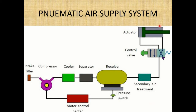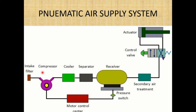Next comes the secondary air treatment system, which involves the control valve and actuator — to be discussed later. First, the inlet filter: it is required because atmospheric air carries a lot of dust material. The filter removes those dust particles before passing air to the compressor. The compressor is the heart of the pneumatic air supply system — it compresses the air, reducing its volume and increasing its pressure. Since temperature is directly proportional to pressure, as pressure increases, temperature also increases.